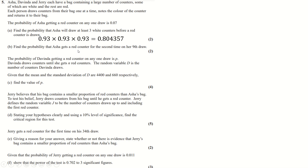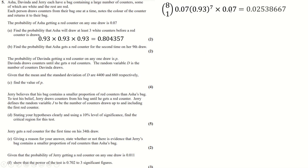For the probability of getting a red for the second time on the ninth draw, in the first 8 draws she must have had exactly 1 red. That probability is C(8,1) × (0.07)¹ × (0.93)⁷ — a small binomial. Then on the ninth draw she must get a red, multiplying by 0.07.